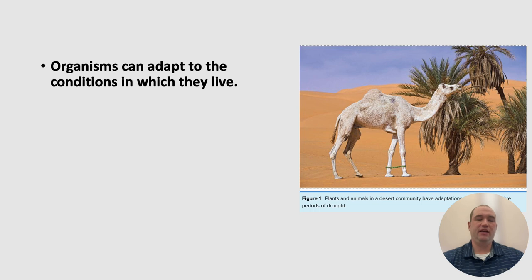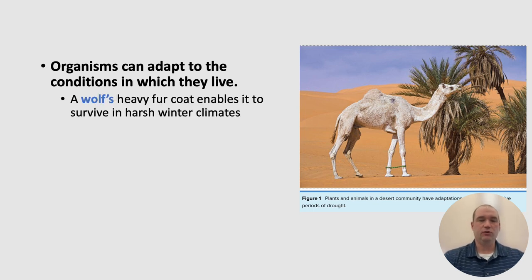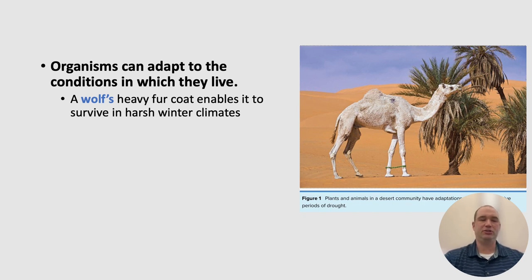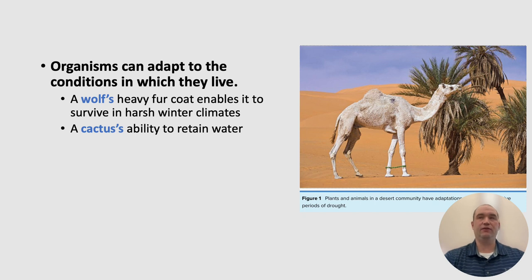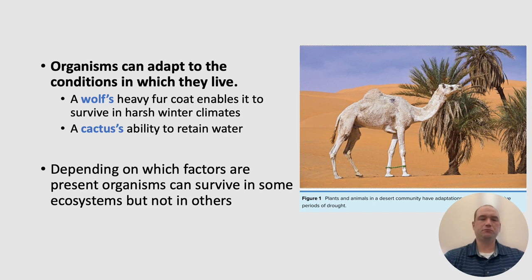Organisms can adapt to live in conditions in which they live. A camel is well-adapted to survive in the desert, as are palm trees, which are adapted to survive in very low rainfall conditions. A wolf lives in a very cold climate — this is why wolves have a very heavy fur coat, which enables them to survive in harsh winters. A cactus has a very thick outside layer that helps trap in water, helping it retain water in very dry conditions. Depending on which factors are present, organisms can survive in some ecosystems but not in others.